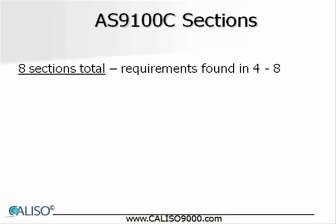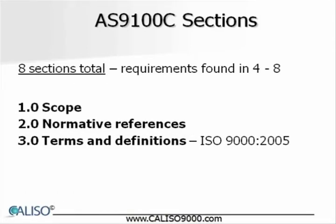There are eight sections in this standard. Sections 1, 2, and 3 contain no requirements. Remember that the AS9100 standard starts with the requirements of ISO 9001-2008 and adds requirements necessary for aviation, space, and defense organizations. If you're familiar with the ISO 9001-2008 standard, you'll undoubtedly recognize its similarities. If not, you'll learn about the requirements as you progress through your online course. However, as I move through this material, I will highlight some of the major differences between these two standards.